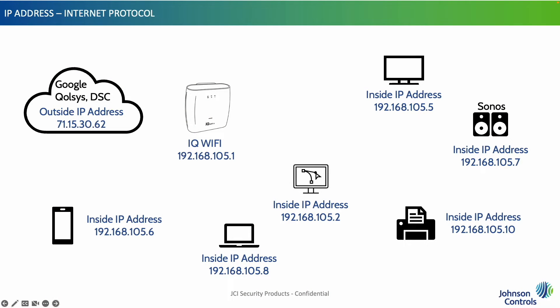Now that we have some basic understanding of network terms, let's dive into IP addressing. IP addresses, or Internet Protocol, is the way devices inside or outside your local area network, or LAN, operate and communicate with one another. Let's quickly review the difference between an outside IP address, also known as a public IP, and an internal IP address. You'll notice each internal or external IP address has four octets, with a maximum number of three digits per octet.